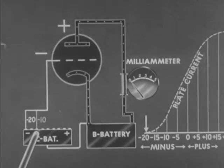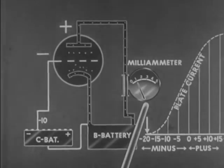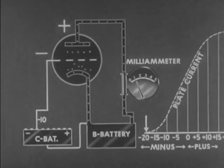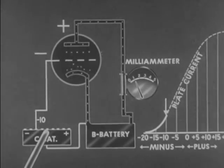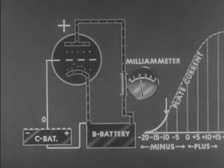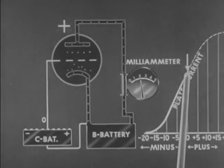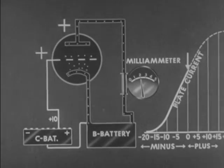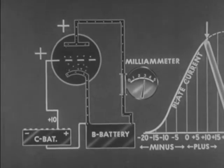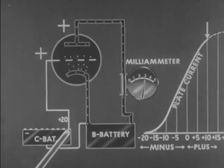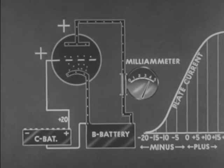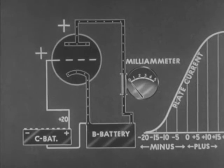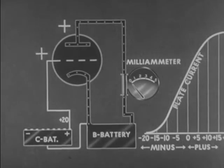Now if we change the grid bias to minus 10 volts, the milliammeter indicates one unit of current flow in the plate circuit. The arrow on the plate current graph moves up a corresponding distance. If the grid bias is made still more positive, plate current increases. A still more positive grid results in still greater plate current. Another increase in positive grid voltage leads to the saturation of the tube. A narrow range of grid voltage is thus seen to control the entire output of the tube, extending from zero plate current to the tube's maximum output. This is why the grid is called the control grid.